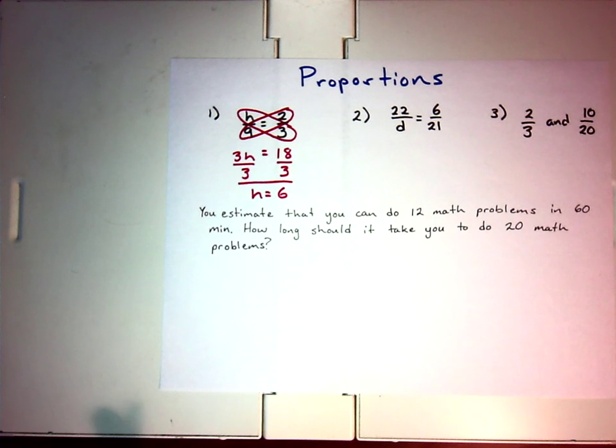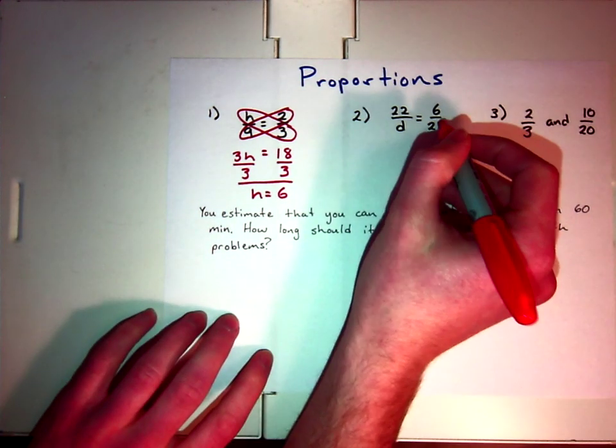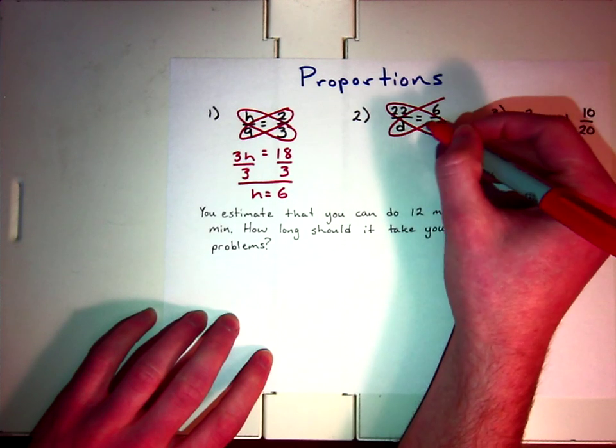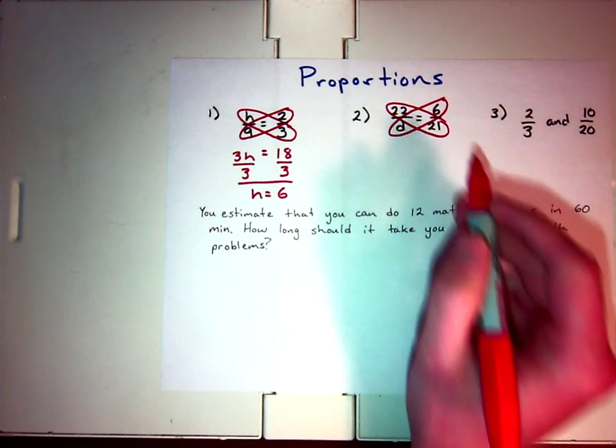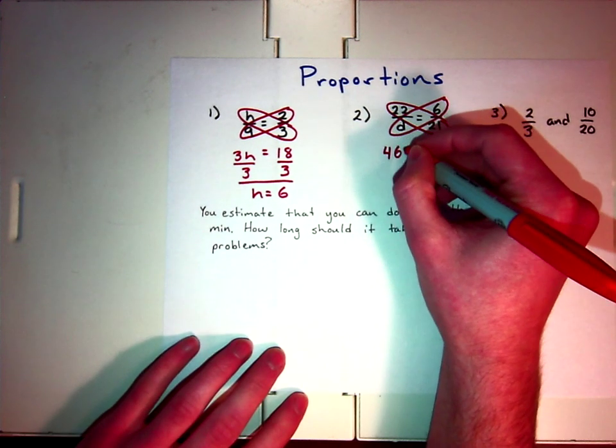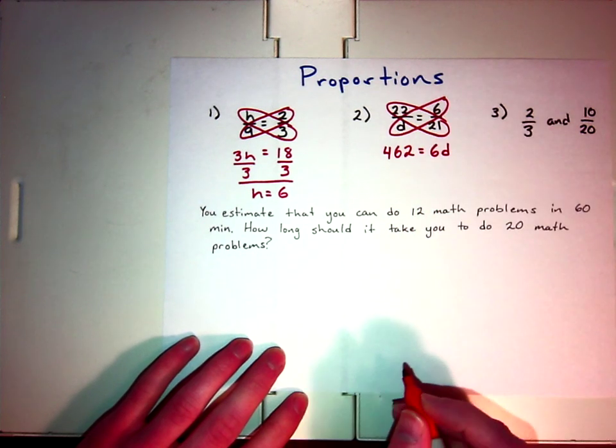I don't look at 22 over a variable D equals 6 over 21 and see the answer right away. Maybe you do, maybe you're a genius. That's great. So, what we're going to do is, we're going to use this strategy. We are going to multiply 22 by 21, and that equals 462, and then it's equal to 6D.